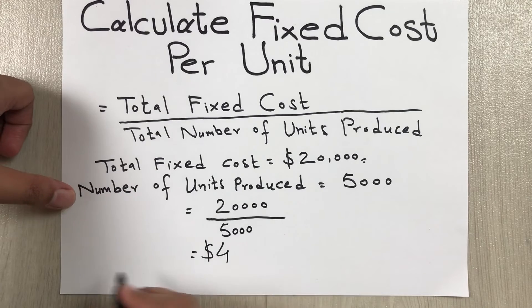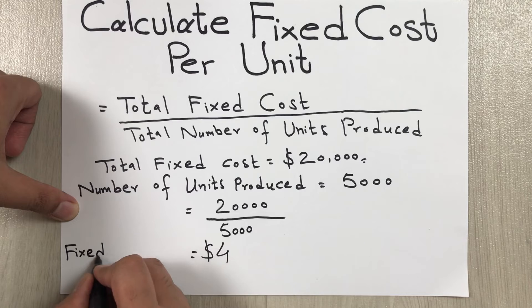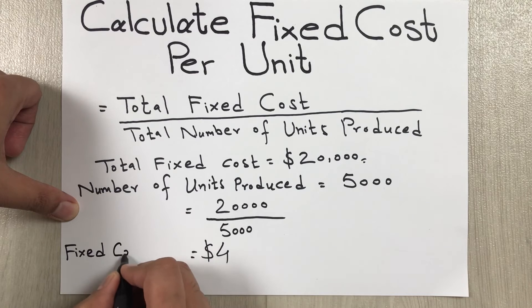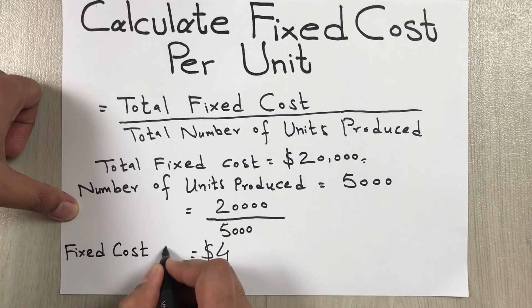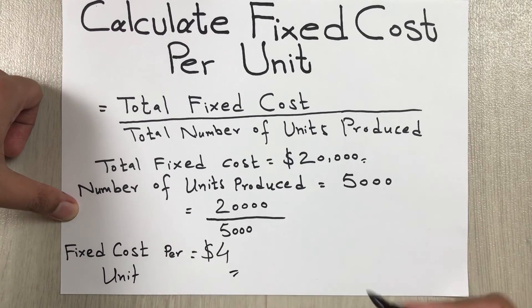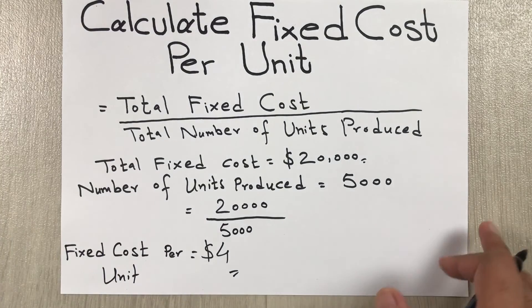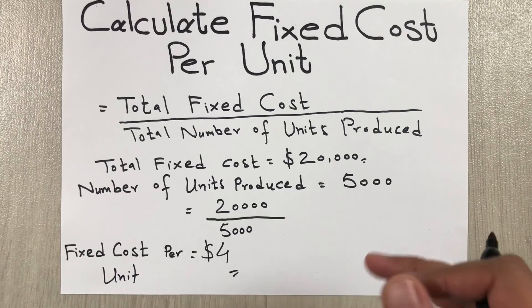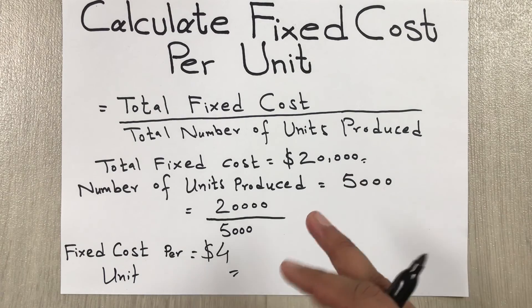So four dollars is our fixed cost per unit. This is how you can calculate the fixed cost per unit.